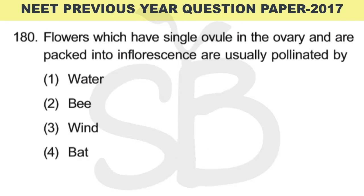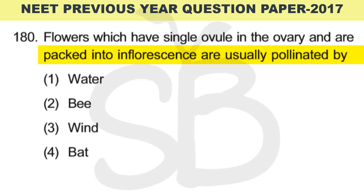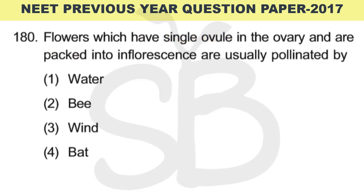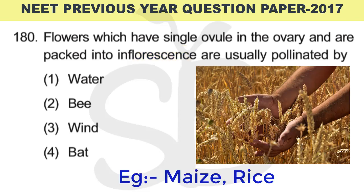Question number 180: Flowers which have a single ovule in the ovary and are packed into inflorescence are usually pollinated by what? These are flowers with numerous blooms packed into an inflorescence, each with one ovule — like maize or rice. Such plants are typically wind-pollinated.